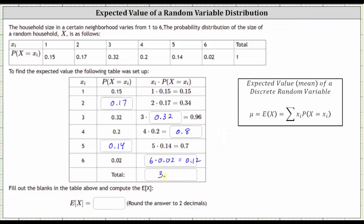This is the mean or expected value, which we indicate using the notation shown here below: E(X) equals 3.07, which means if we select a random household, we would expect the household size to be approximately 3.07.